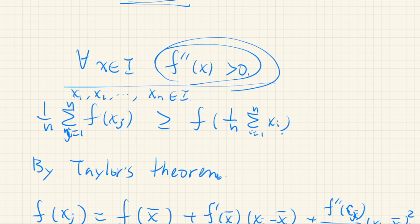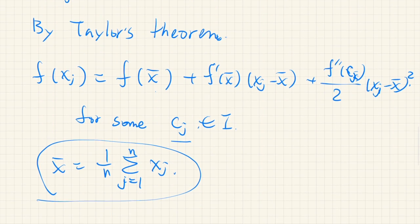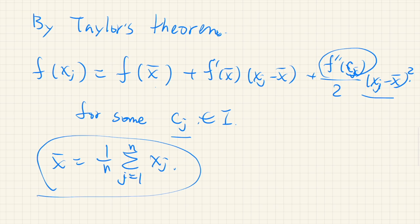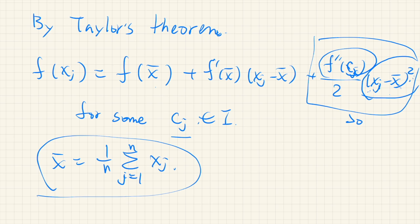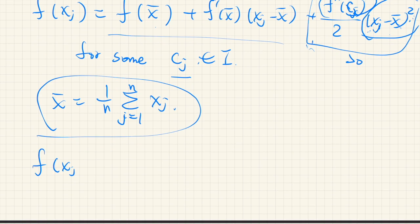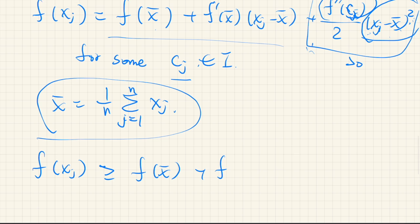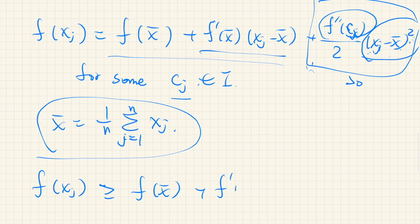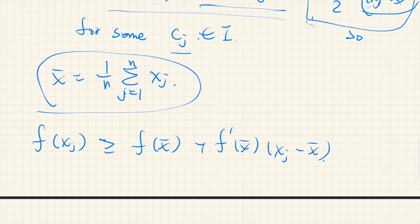Since f''(Cj) > 0 (given condition) and (xj − x̄)² is always non-negative as a square of a real number, the second-order term is non-negative. So if we drop this term, we get the inequality: f(xj) ≥ f(x̄) + f'(x̄)(xj − x̄).